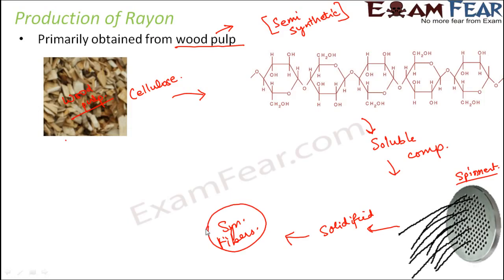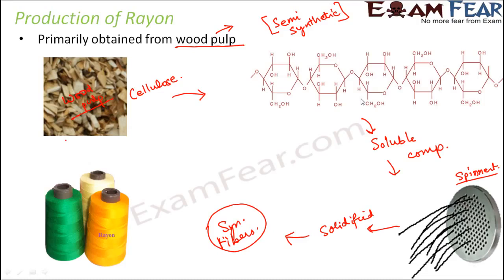For any synthetic fiber, the process more or less follows this same scenario. Specific types of rayon are manufactured in different ways depending on the exact process and chemical substances used. Different types of rayon include viscose, modal, and lyocell — these are all subtypes of rayon.